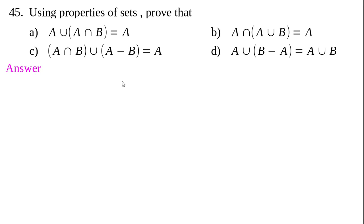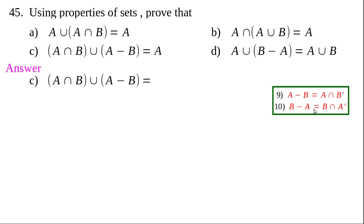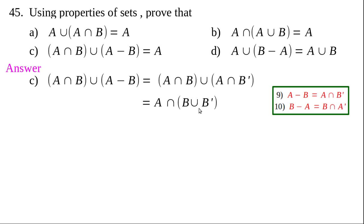Part (c): (A∩B)∪(A−B) = A. Replace A−B with A∩B' (as derived in the complement section). So (A∩B)∪(A∩B') = A∩(B∪B') by the distributive law. Since B∪B' = U (the universal set), we get A∩U. Since A⊂U, the intersection gives A. Therefore (A∩B)∪(A−B) = A.